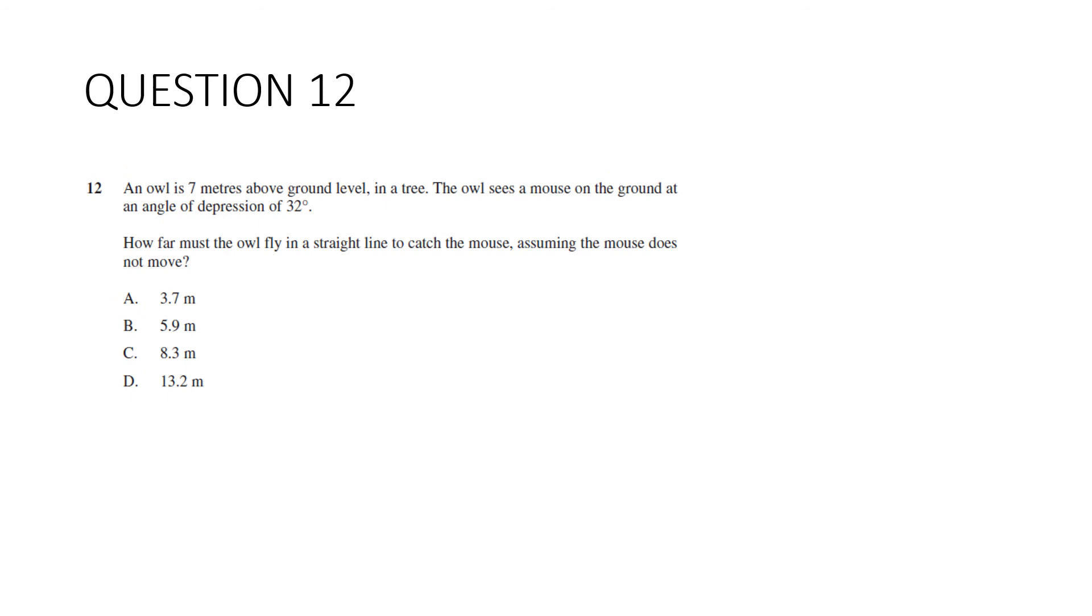Question twelve. This question cracked me up. An owl is seven metres above the ground in a tree. The owl sees a mouse on the ground and gets out its theodolite and measures the angle of depression as 32 degrees. How far must the owl fly in a straight line to catch the mouse assuming the mouse does not move and assuming the owl has a calculator? We're going to draw a diagram. So the first thing we've got to do is angle of depression. Remember it's that one that's always tricky. So it's this angle here. It's from where the owl is looking straight out to where it's looking down. It's not this angle here. It's a common error. Also remember angle of depression is the same as the angle of elevation because of alternate angles. So let's put it down there. We want to know how far the owl has to travel. So that's this distance here. So let's put a pronumeral. We're ready.